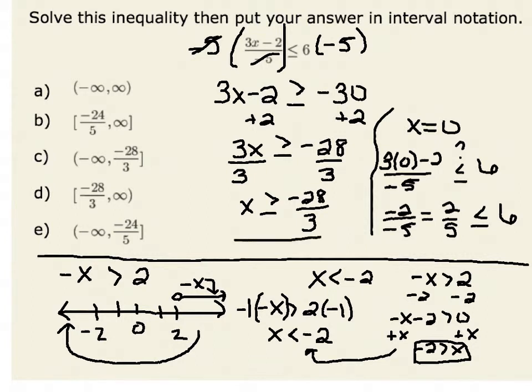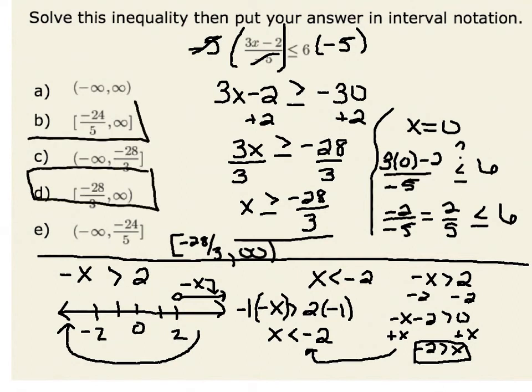Therefore, my last step is to take my answer, x being greater than or equal to negative 28 thirds, and write that in interval notation. Since I'm looking at x being greater than or equal to negative 28 thirds, we know that we would start with our brackets of negative 28 thirds and then go to infinity, giving us d as our answer.